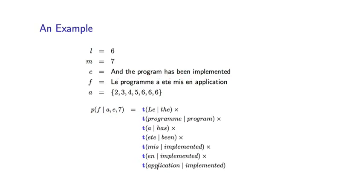Here's the second part of this model. The second part is to define the conditional probability of the French sentence, given that we condition on the English, the alignment, and the two lengths. And in this case, it's exactly the same as Model 1.